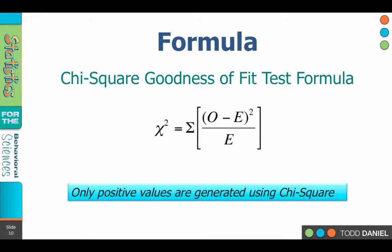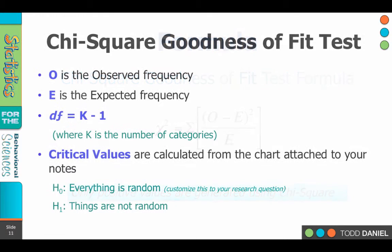Now it's a chi-square test — squared values — that means that only positive values are going to be generated. Because anytime you square a value, it makes it positive. So the squaring of the chi-square is going to ensure that only positive values are created.